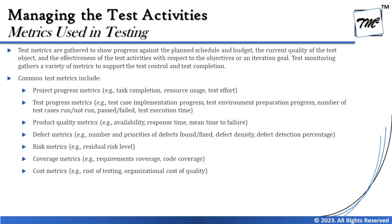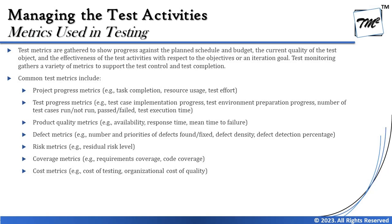Some high-level examples of metrics include: project progress metrics such as test completion, resource utilization, or test effort applied so far; test progress metrics like test case implementation progress, test environment preparation progress, number of test cases run, not run, pass or fail, and overall test execution time; product quality metrics such as availability, response time, and mean time to failure; defect metrics like number and priorities of defects found or fixed, defect density, and defect detection percentage; risk metrics covering the number of risks remaining to be resolved or mitigated; coverage metrics such as requirement coverage, code coverage, statement coverage, decision coverage, and path coverage; and cost metrics like cost of testing and organizational cost of quality.